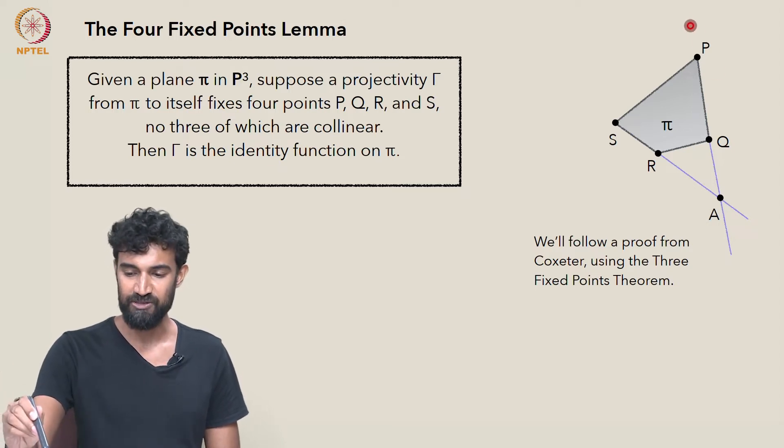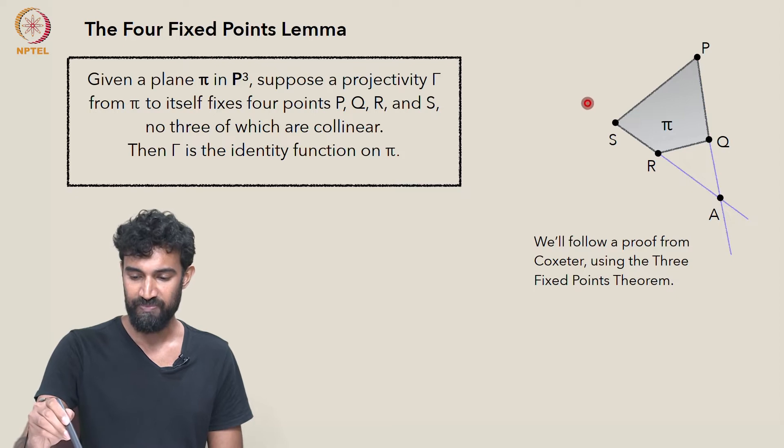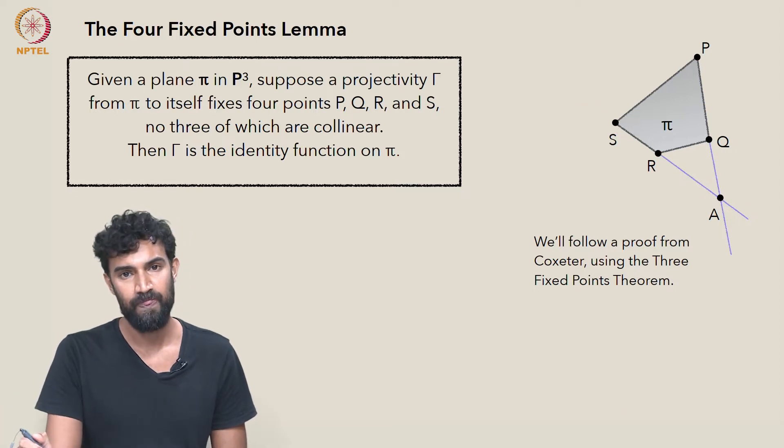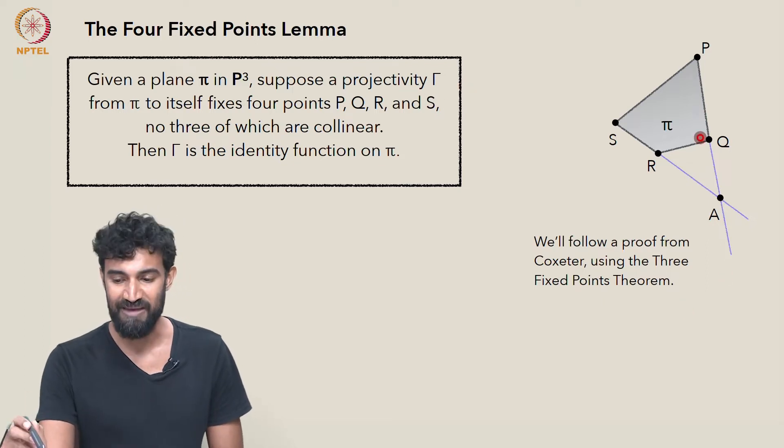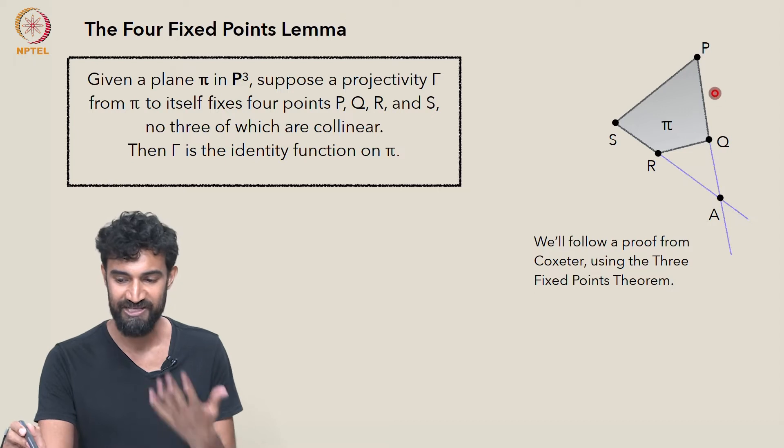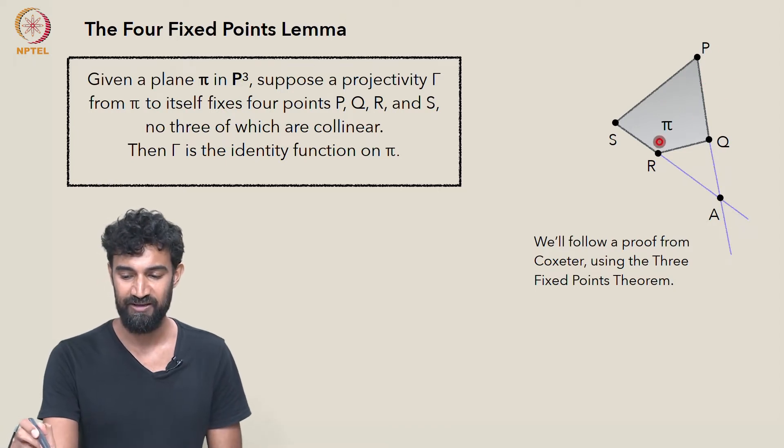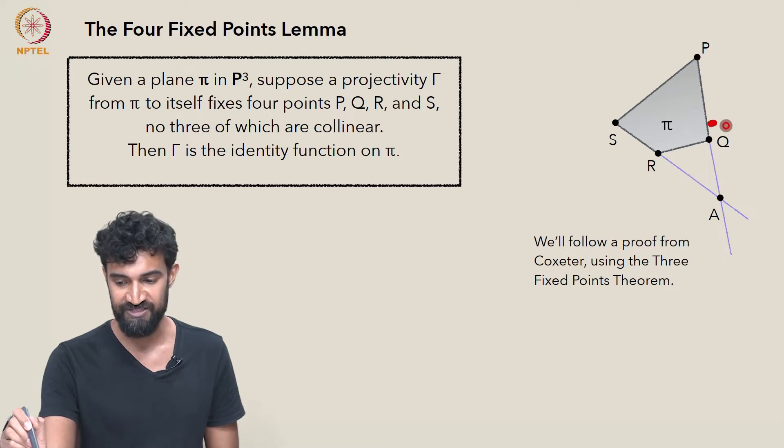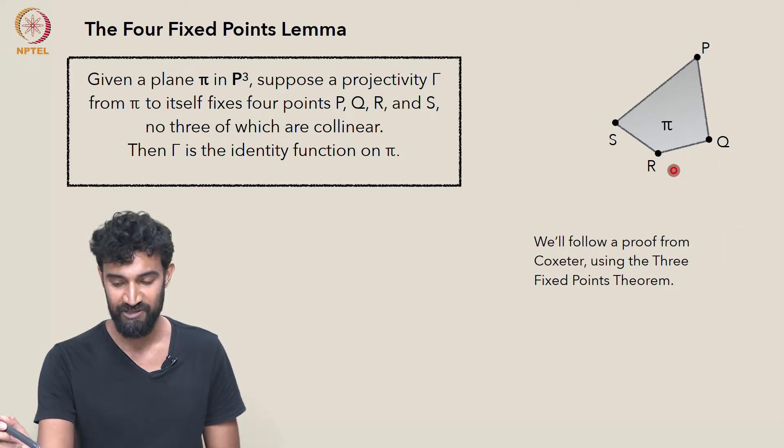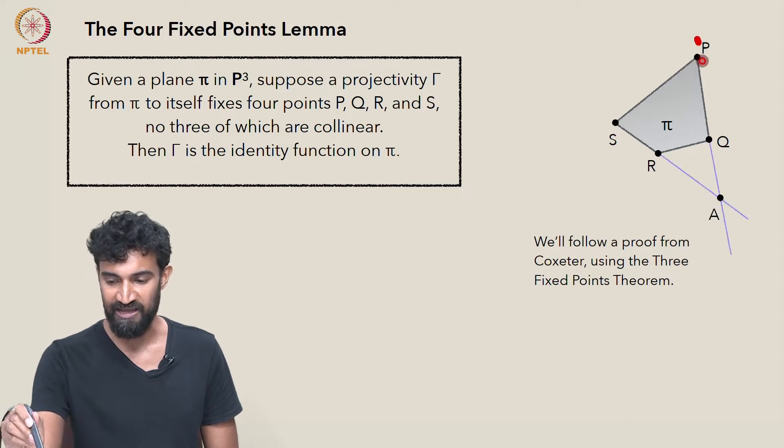So to prove it, let's first consider the lines PQ and SR. How does γ treat those lines? γ is mapping π to itself, taking various points of π to other points of π. But it's fixing P, Q, R, and S. That's all we know to begin with.